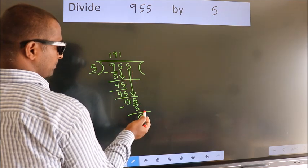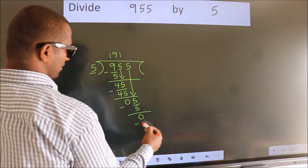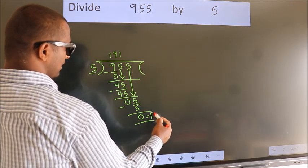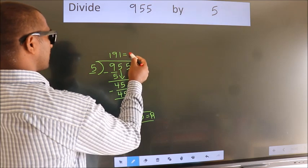No more numbers to bring it down. So we stop here. This is our remainder. This is our quotient.